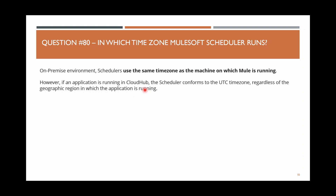However, if the application is deployed to CloudHub, the scheduler always runs in UTC timezone regardless of the geographic region — whether it's the US, Singapore, or Europe region. So if you schedule something for 5 o'clock, that means 5 AM UTC.